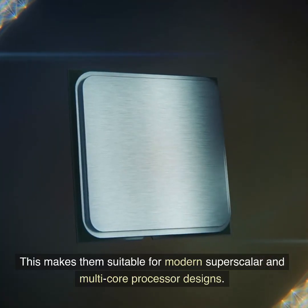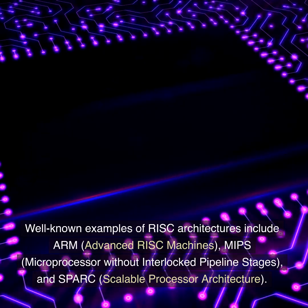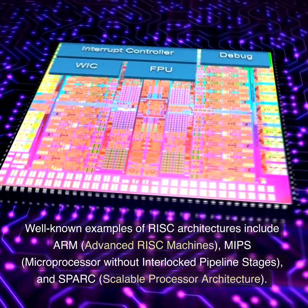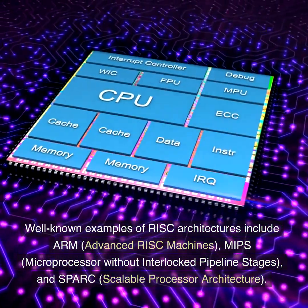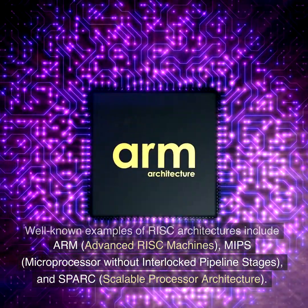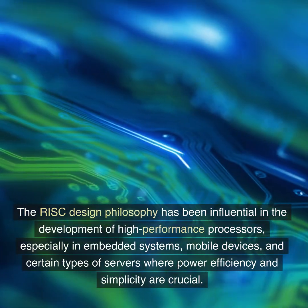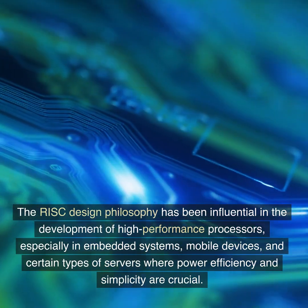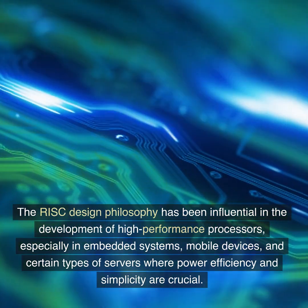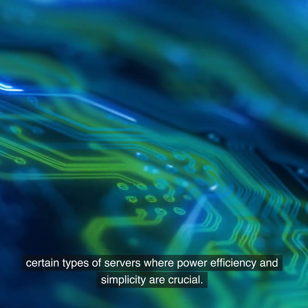This makes them suitable for modern superscalar and multi-core processor designs. Well-known examples of RISC architectures include ARM (Advanced RISC Machines), MIPS (Microprocessor without Interlocked Pipeline Stages), and SPARC (Scalable Processor Architecture). The RISC design philosophy has been influential in the development of high-performance processors, especially in embedded systems, mobile devices, and certain types of servers where power efficiency and simplicity are crucial.